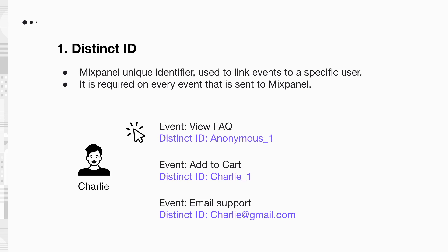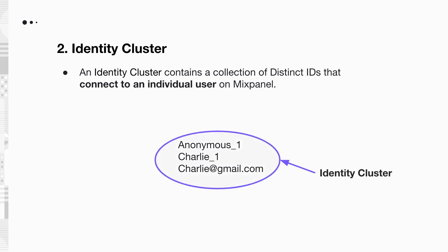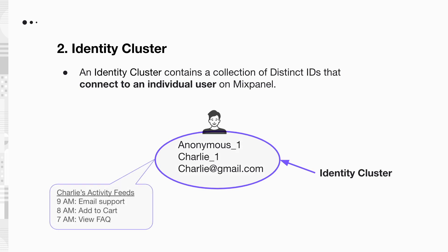This brings us to our second concept: the identity cluster. An identity cluster contains a collection of Distinct IDs that connect to an individual user on Mixpanel. Since Charlie's events are sent to Mixpanel with different Distinct IDs, this would create three different users. To prevent this, we can group Charlie's Distinct IDs into an identity cluster. This will ensure that all events that have any of these Distinct IDs on them are linked to Charlie on Mixpanel.